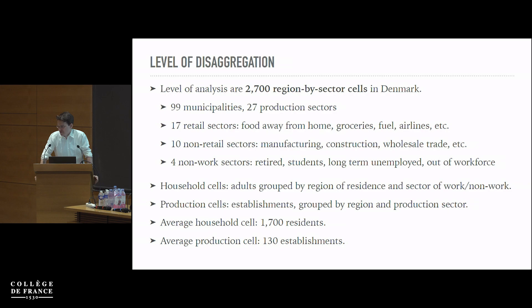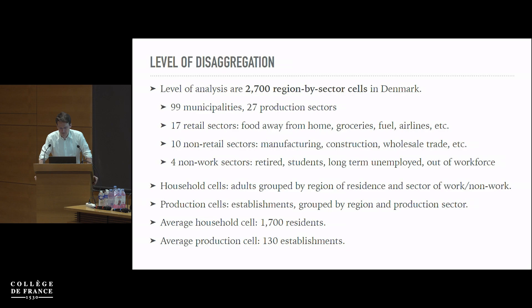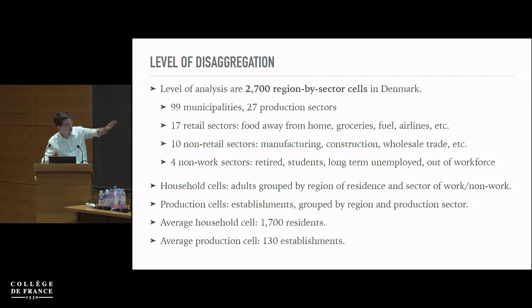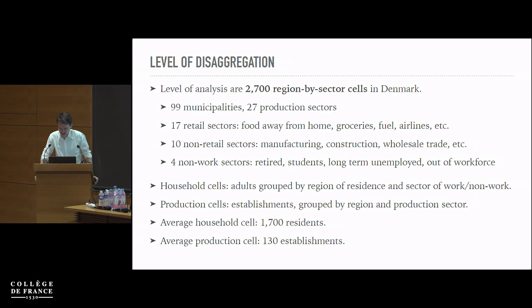The level of analysis will be region-by-sector cells. We'll have approximately 2,700 such cells in Denmark: 99 municipalities as regions and 27 production sectors. These include 17 retail sectors such as food away from home, groceries, fuel, and airlines, and 10 non-retail sectors such as manufacturing and construction. We also allow for non-work sectors because we want to assign every adult in Denmark to one cell — so we allow for retired, students, long-term unemployed, and out-of-workforce individuals.